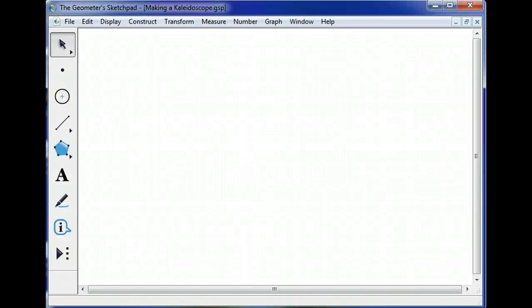We're going to learn how to make a kaleidoscope with Geometry Sketchpad, and I'm using Geometry Sketchpad version 5, but I'll make sure to use steps that can be done on Geometry Sketchpad version 4 as well.